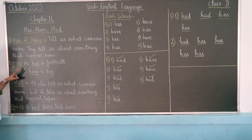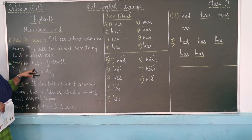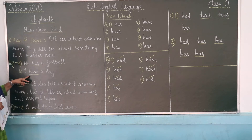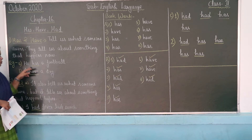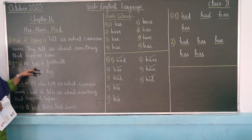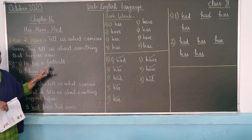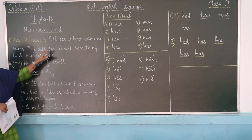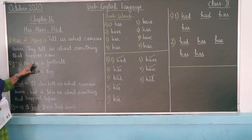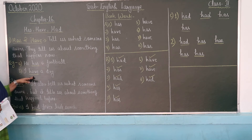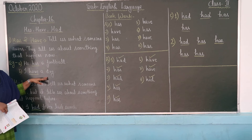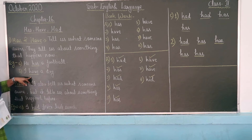For example, there are two examples. The first one is about Has and the second one is about Have. The first example is: He has a football. He has a football — that means what someone owns. The second example is: I have a dog. So we use Has and Have accordingly in these sentences.